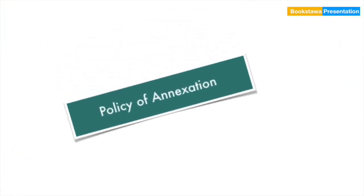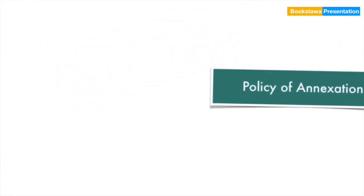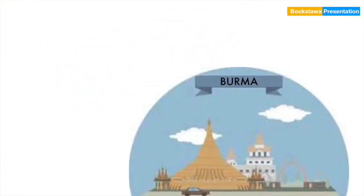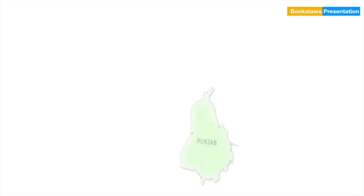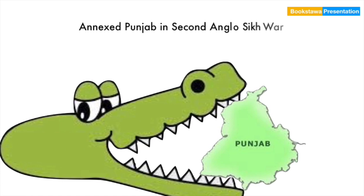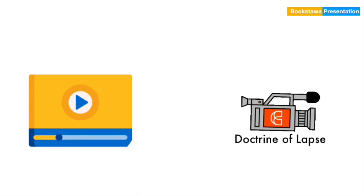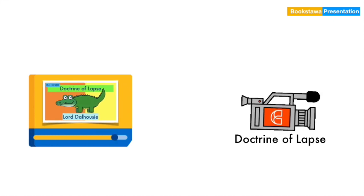Now, we will talk about Lord Dalhousie's policy of annexation. Lord Dalhousie was an expansionist governor-general. He had annexed Burma, that is, today's Myanmar, by defeating it in the Second Anglo-Burmese War. Besides this, after the Second Anglo-Sikh War, Punjab was also made a part of the British Presidency. Not only this, he had also annexed Satara, Jagdpur, Sambalpur, Nagpur, and Jhansi by using the famous Doctrine of Lapse policy.